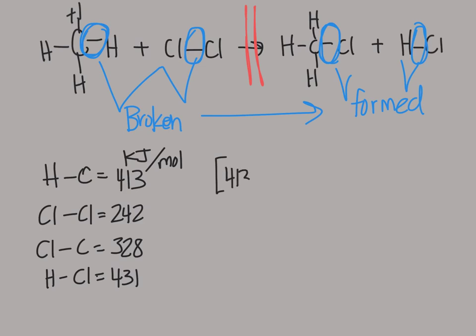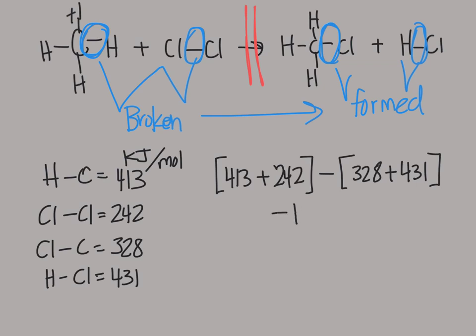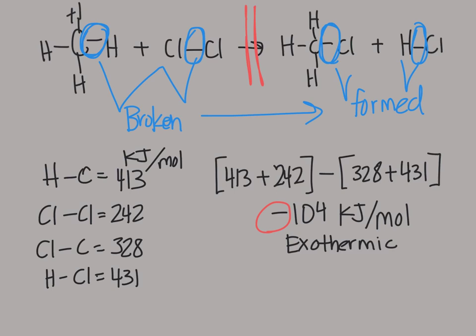We have 413 for C-H, and Cl-Cl is 242. Then we have 328 for C-Cl and 431 for H-Cl on the formed side. When we do all the math, we get a value of negative 104 kilojoules per mole. Because this is negative, if you remember back to thermochemistry, a negative delta H means that energy is being given off — it would be exothermic, meaning this reaction actually produces heat to go forward.